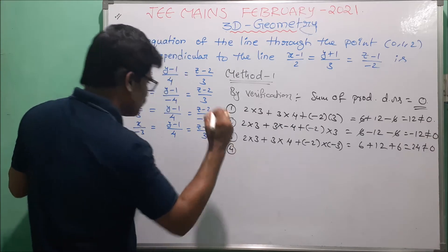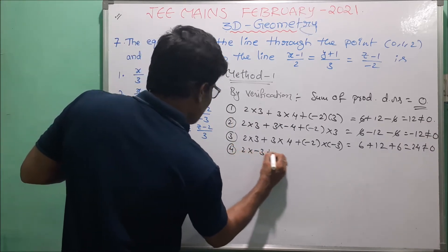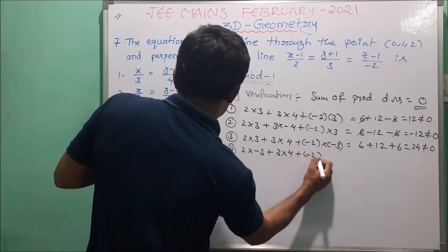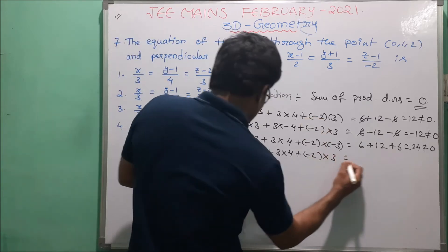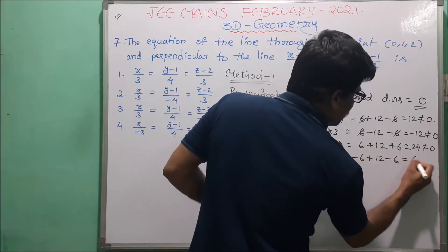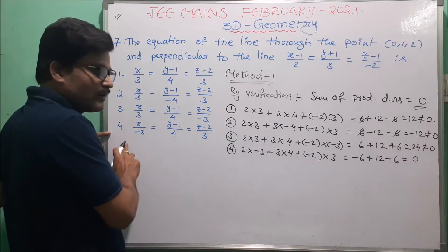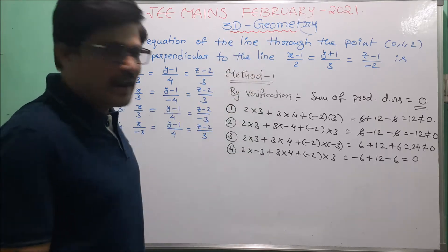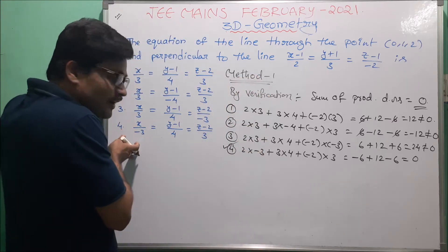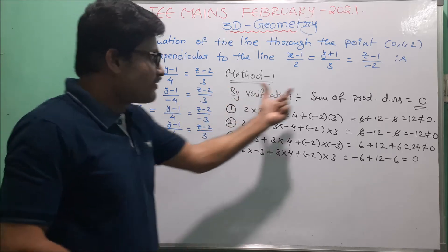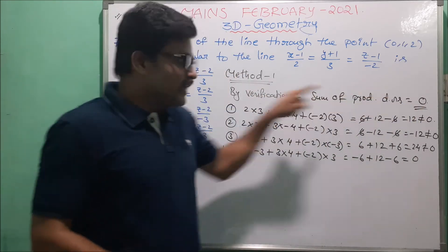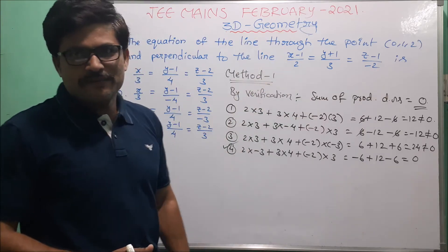For option 4, DRs (minus 3, 4, 3): 2 into minus 3 plus 3 into 4 plus minus 2 into 3 equals minus 6 plus 12 minus 6 equals 0. This line is clearly perpendicular to the given line. So the fourth option is the right answer. This is method 1 — with options given, we verify by the verification method using the condition that the sum of the product of DRs equals zero.